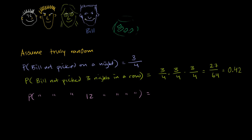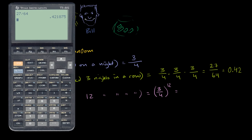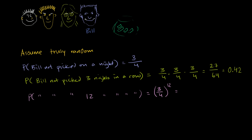That's going to be twelve three-fourths multiplied together — three-fourths to the 12th power. Three-fourths is 0.75, and 0.75 to the 12th power gives approximately 0.032, which is equal to 3.2%. So now you have every right to start thinking something is getting fishy.